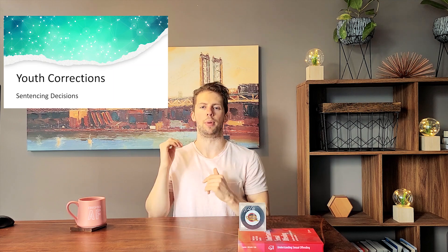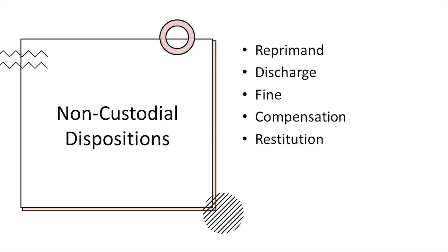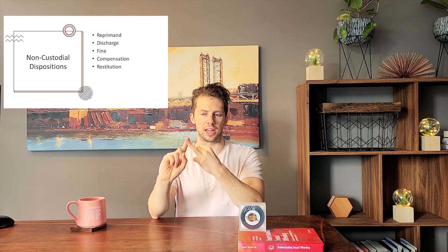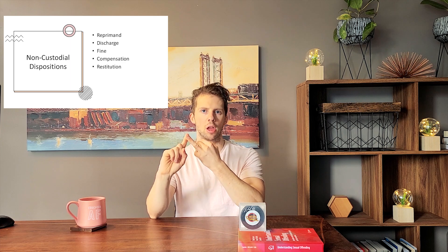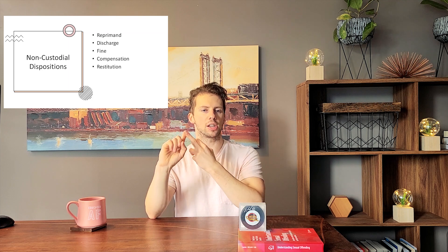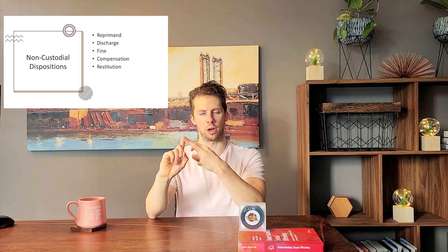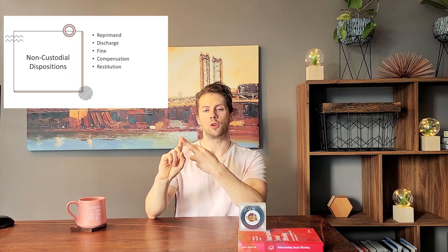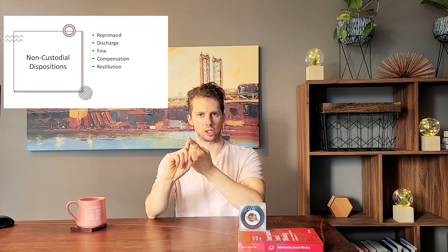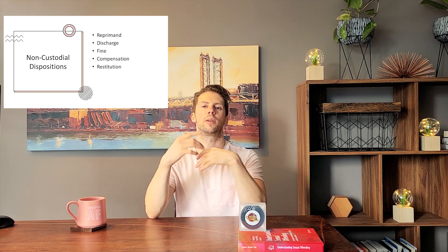Under the YCJ there are different custody and non-custody dispositions — basically what a judge can apply to a young person under the purview of corrections. Non-custody dispositions include reprimands, which is a simple warning; an absolute discharge, which releases the individual with no conditions; and a conditional discharge, meaning that if the individual abides by certain conditions over a period of time, the offense will be quashed from their record.